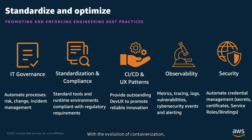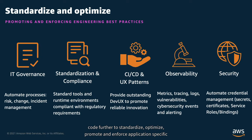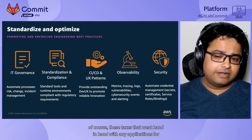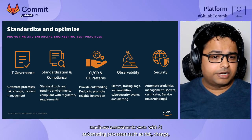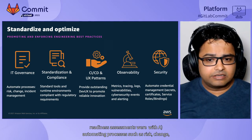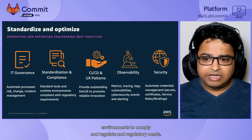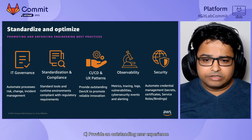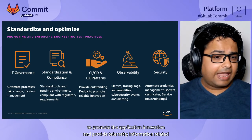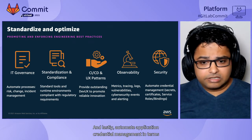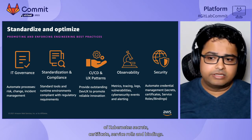With the evolution of containerization it has become even easier to apply the same concepts of infrastructure as code to standardize, optimize, promote, and enforce application-specific deployments — which have historically been taxed with the underlying need to operationalize applications. These operational taxes related to application production-readiness assessments include: (a) automating processes such as risk, change, and incident management; (b) providing a standardized set of tools and runtime environments to comply with regulatory needs; (c) providing an outstanding user experience to promote application innovation; (d) providing telemetry information related to metrics, tracing, and logging; and lastly, (e) automating application credential management in terms of Kubernetes secrets, certificates, service roles, and bindings.